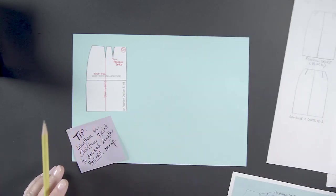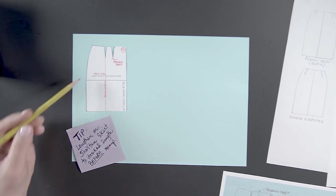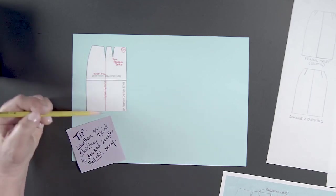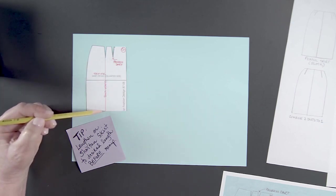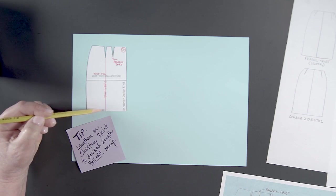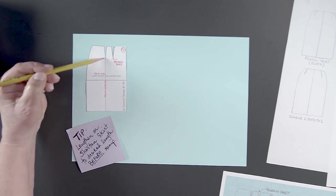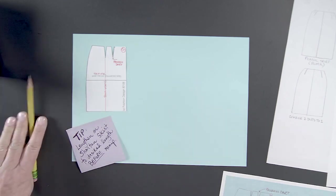It's going to look like this when it's finished. And we're going to then to create fullness here, flare. We can simply draw a slash line here. Then we would cut up to but not through this dart tip and tape this dart shut. So let's do that.